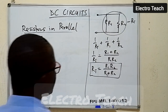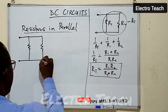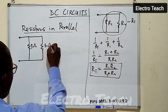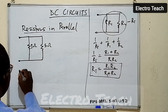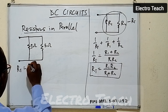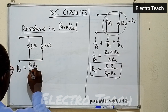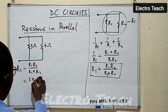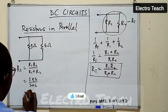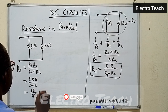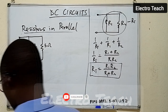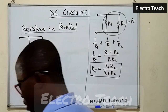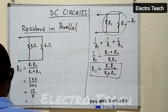For two resistors in parallel, we have R1 equals 3 ohms and R2 equals 5 ohms. Using RT equals R1 times R2 over R1 plus R2, that gives us 3 multiplied by 5 divided by 3 plus 5, which is 15 divided by 8. Calculating that gives us 1.875 ohms, and that is the final answer.